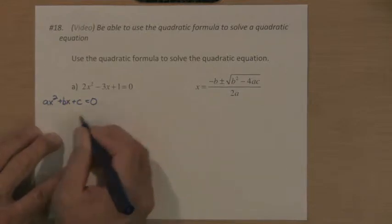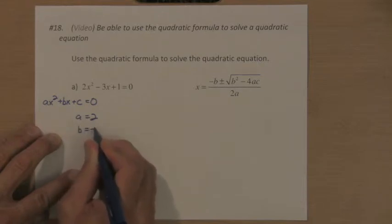So in this example it equals zero, so that means our value of a is 2, our value of b is negative 3, and our value of c is 1.